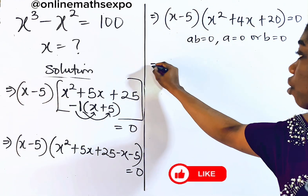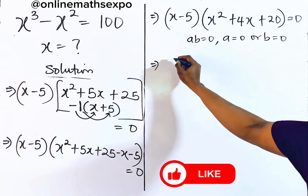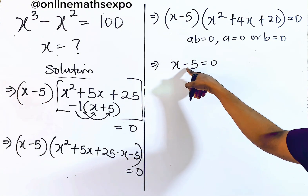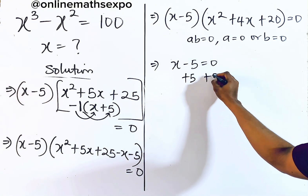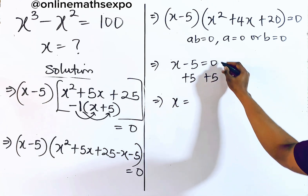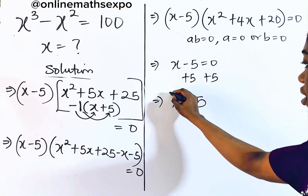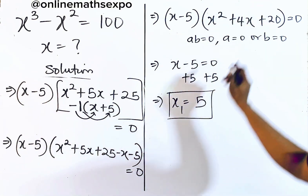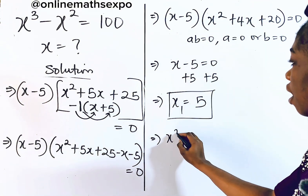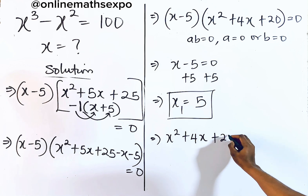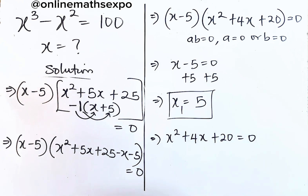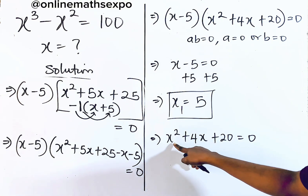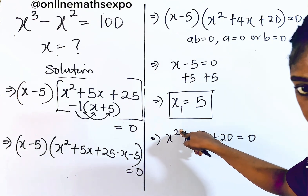From x minus 5 equals 0, add 5 to both sides to get x equals 5. This is the first value of x. Now bring down the second factor: x squared plus 4x plus 20 equals 0, which is our quadratic equation since the highest power of x is now 2.